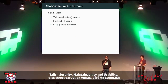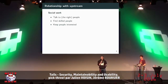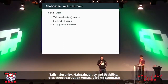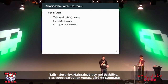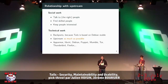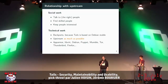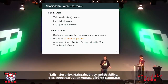There are hard relationships with upstream — you have to talk to the right people, get them involved, find skilled people like kernel security experts, keep them interested, give them interesting tasks, and reward them. It takes a lot of time to do social work for upstream contributions. There's also technical work like backports, since Tails is based on Debian stable. The goal is to upstream as much as possible to keep the delta as small as possible. The Tails project has contributed to AppArmor, Icedove, Firefox, Puppet, Mumble, Tor, Debian, and more.